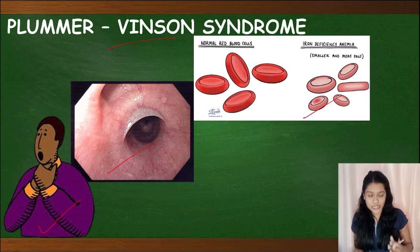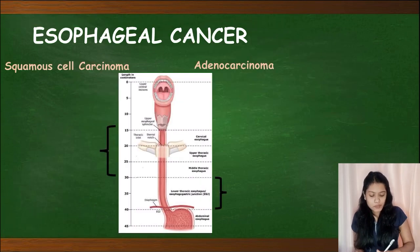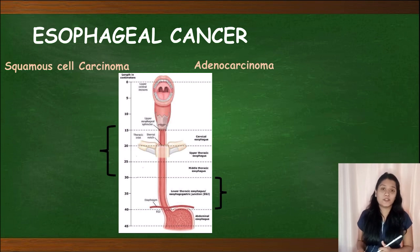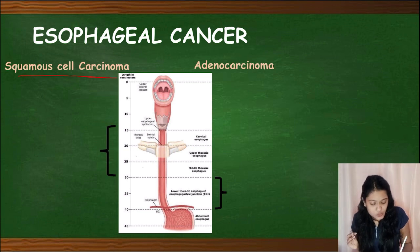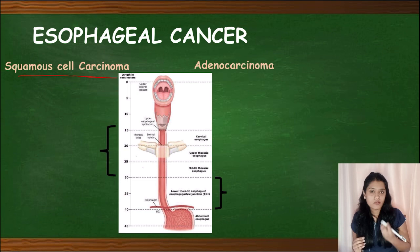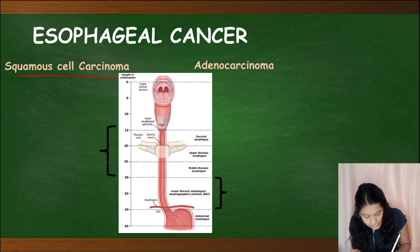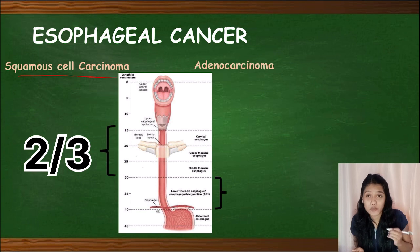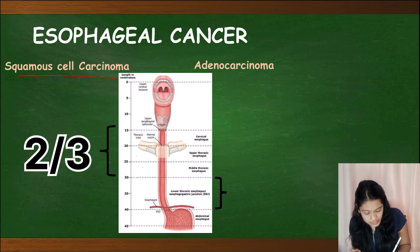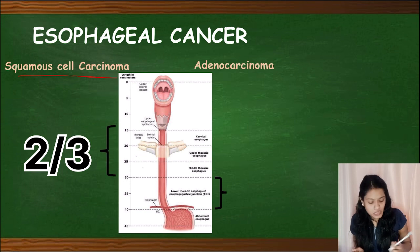Plummer-Vinson syndrome is also associated with glossitis. Now, moving towards esophageal cancer — esophageal cancers can be of two types: squamous cell carcinoma or adenocarcinoma. If present in the upper two-thirds of the esophagus, it is squamous cell carcinoma, while adenocarcinoma usually affects the lower one-third.